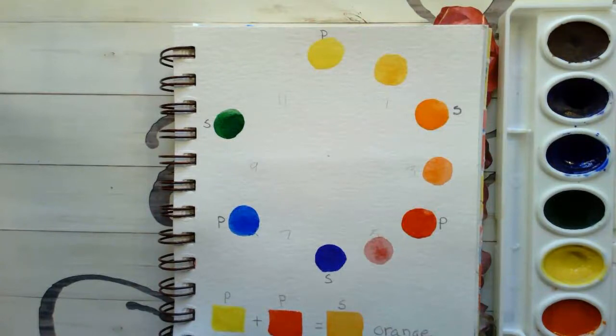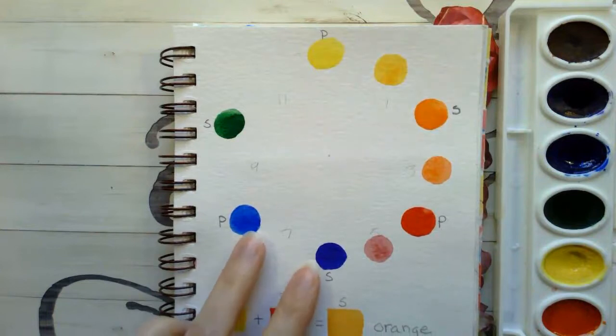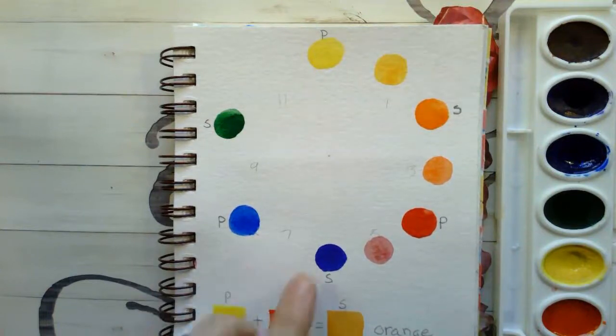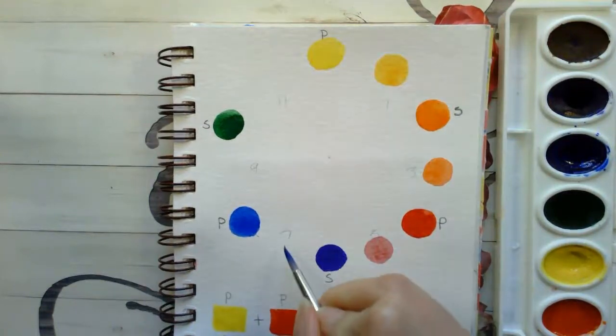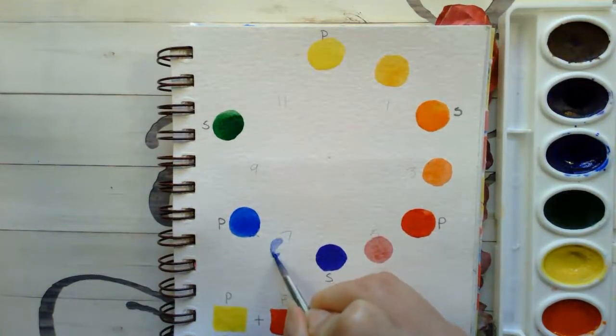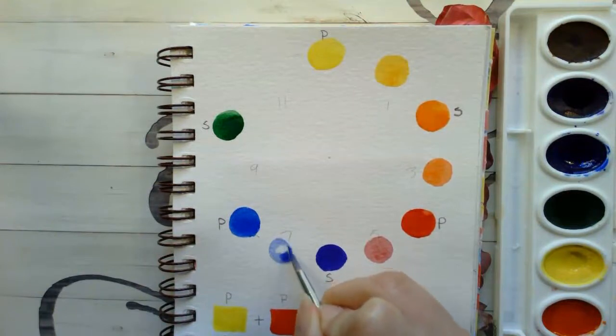Okay, I'm going to rinse my brush out. My next one is going to be blue violet, because it's located between violet and blue. Always adjust your color as needed.